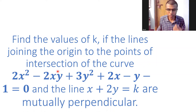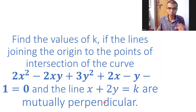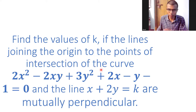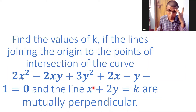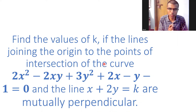Hello learners, here we are given an equation of a pair of straight lines, and for this pair of straight lines another line x plus 2y equals k is meeting it. A newly formed pair of straight lines are mutually perpendicular. Basically, if you join from the origin to the points of intersection of the curve, you get a pair of straight lines and they are mutually perpendicular. We are going to use something known as homogenization to get the actual answer.